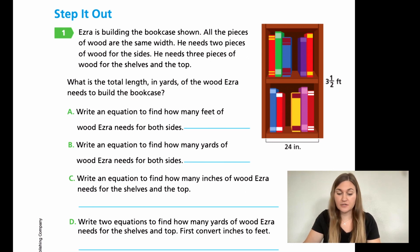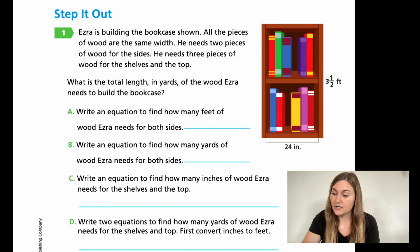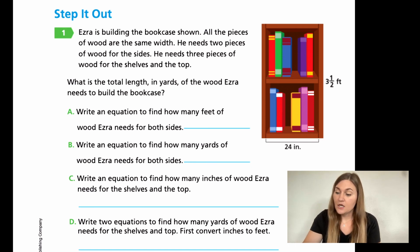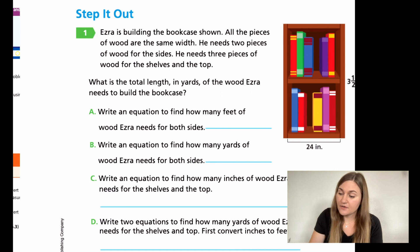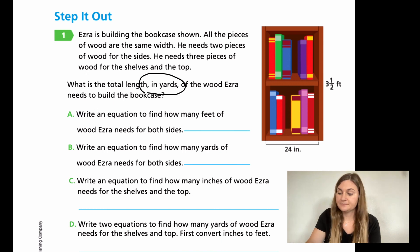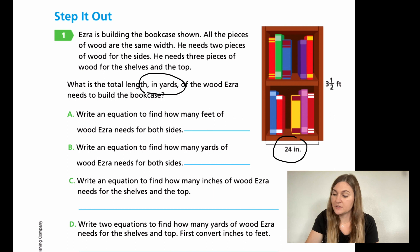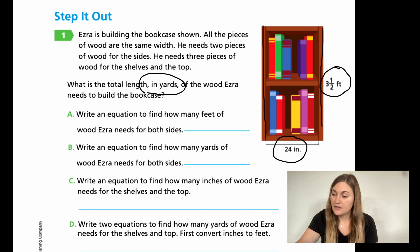And then on the next page, 302, we're going to be in the capacity section. So let's go ahead and read number one. It says Ezra is building the bookcase shown. All the pieces of wood are the same width. He needs two pieces of wood for the sides. He needs three pieces of wood for the shelves and the top. What is the total length in yards of the wood Ezra needs to build the bookcase? I noticed the 'in yards' jumps out to me, because it gives me 24 inches and three and a half feet. It also told me I have two sides and then one here, one here, and one here.